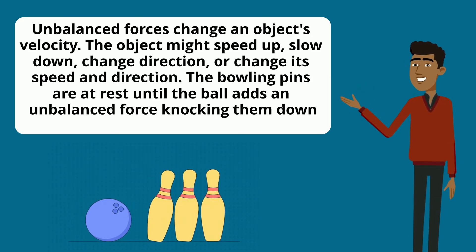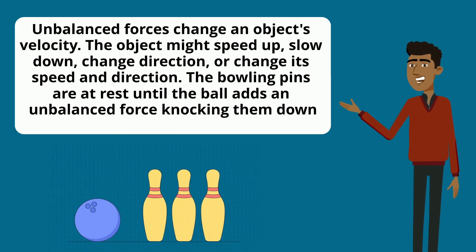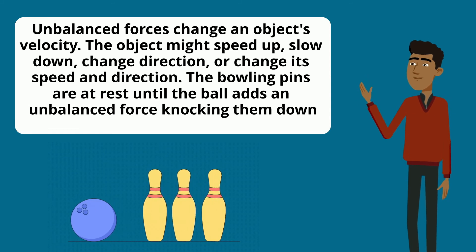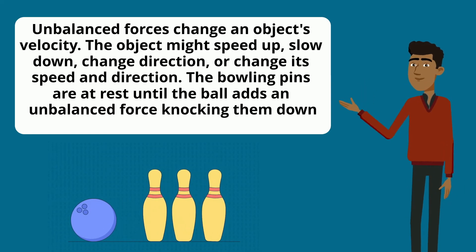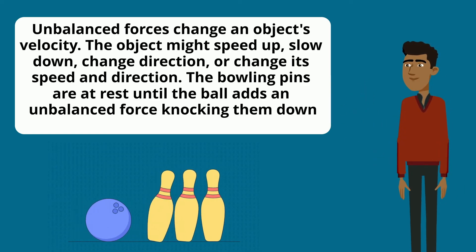Unbalanced forces change an object's velocity. The object might speed up, slow down, change direction, or change its speed and direction. The bowling pins are at rest until the ball adds an unbalanced force, knocking them down.